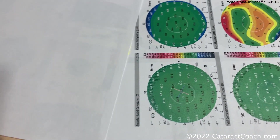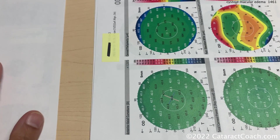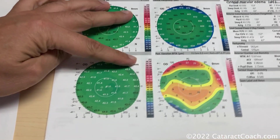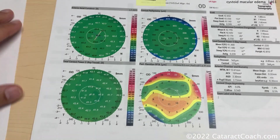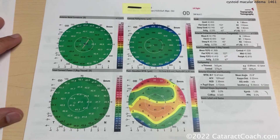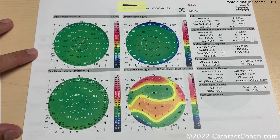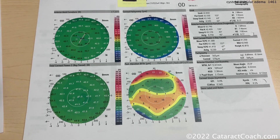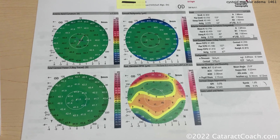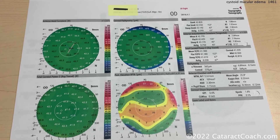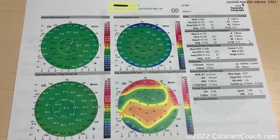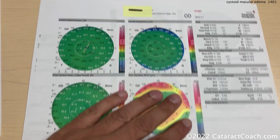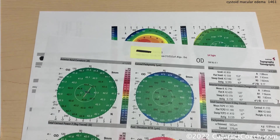On our next page, we looked at the corneal tomography. Here's the right eye — it's all looking pretty good. Minimal amount of astigmatism that'll be easily addressed. Normal corneal pachymetry, normal curvature, normal posterior surface of the cornea. It all looks pretty good. That is the right eye.